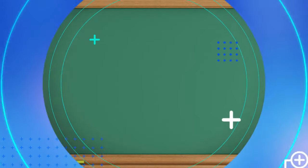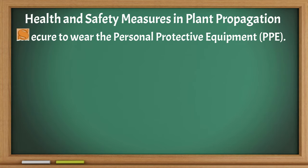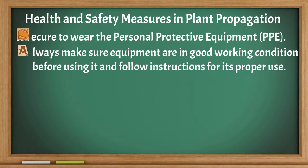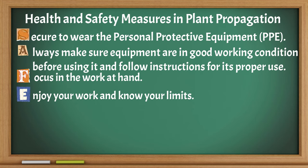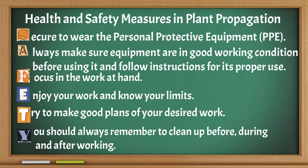Here are the health and safety measures in plant propagation. Secure to wear personal protective equipment or PPE. Always make sure equipment is in good working condition before using it and follow instructions for proper use. Focus on the work at hand. Enjoy your work and know your limits. Try to make good plans for your desired work. Always remember to clean up before, during, and after working.